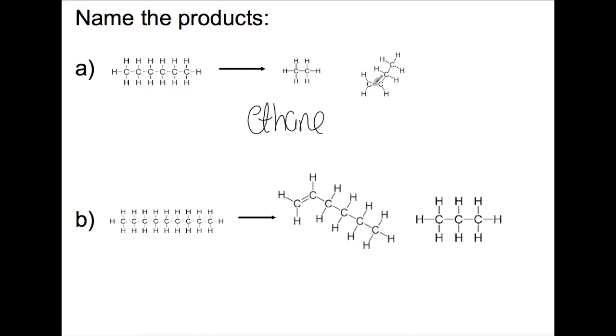Here we have four carbons and we have a double bond. So this is butene rather than butane. Here we have six carbons with a double bond, so this is an alkene and this is hexene.